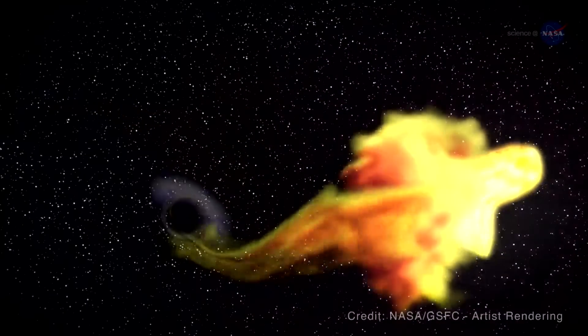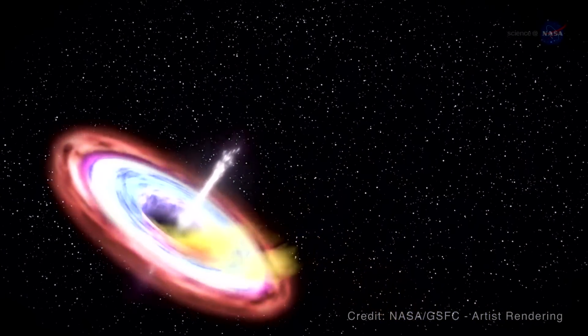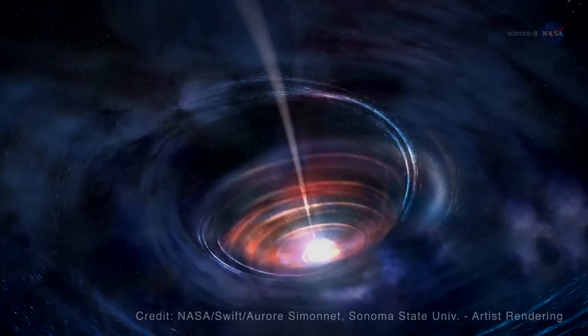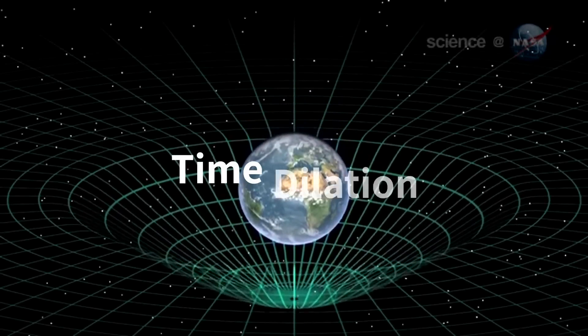According to Einstein's theory of relativity, time and space are interwoven into a single continuum known as space-time. Massive objects like black holes distort this space-time, causing time to slow down near them, a phenomenon known as time dilation.